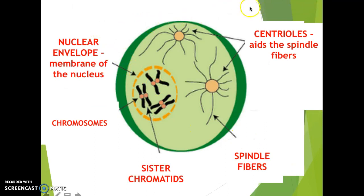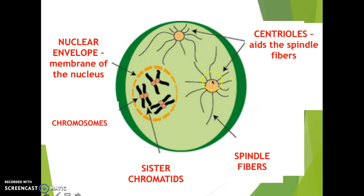Something important to understand is the role of organelles called centrioles. The centrioles are kind of like two bodyguards that come in and step up on either side of the cell, and they're actually going to separate the chromosomes. Centrioles are organelles that will be used to separate those chromosomes.